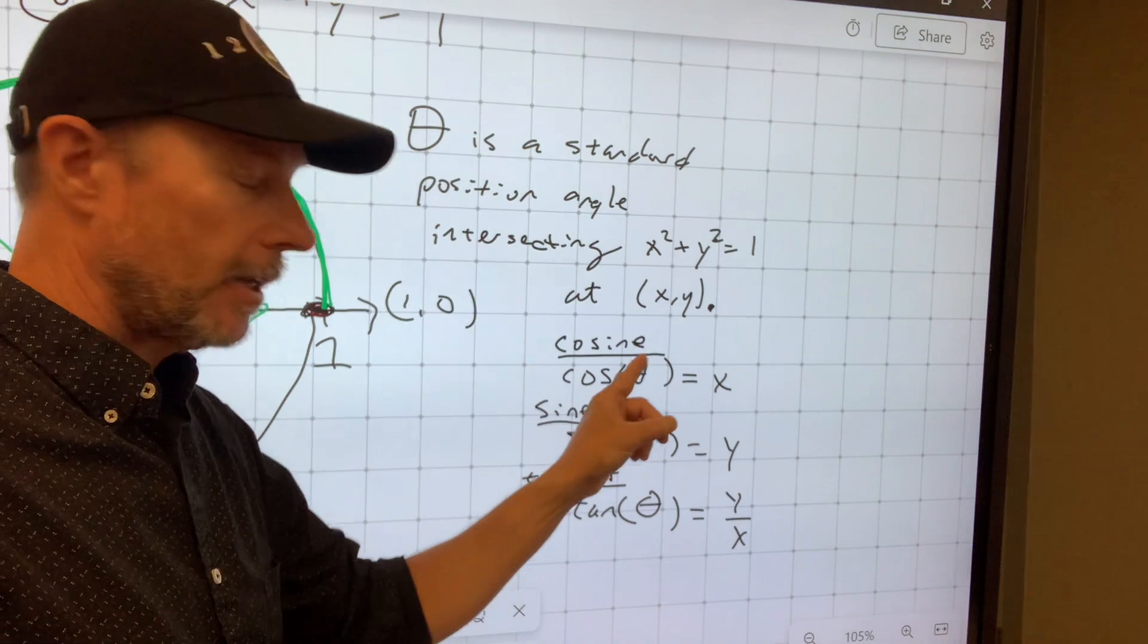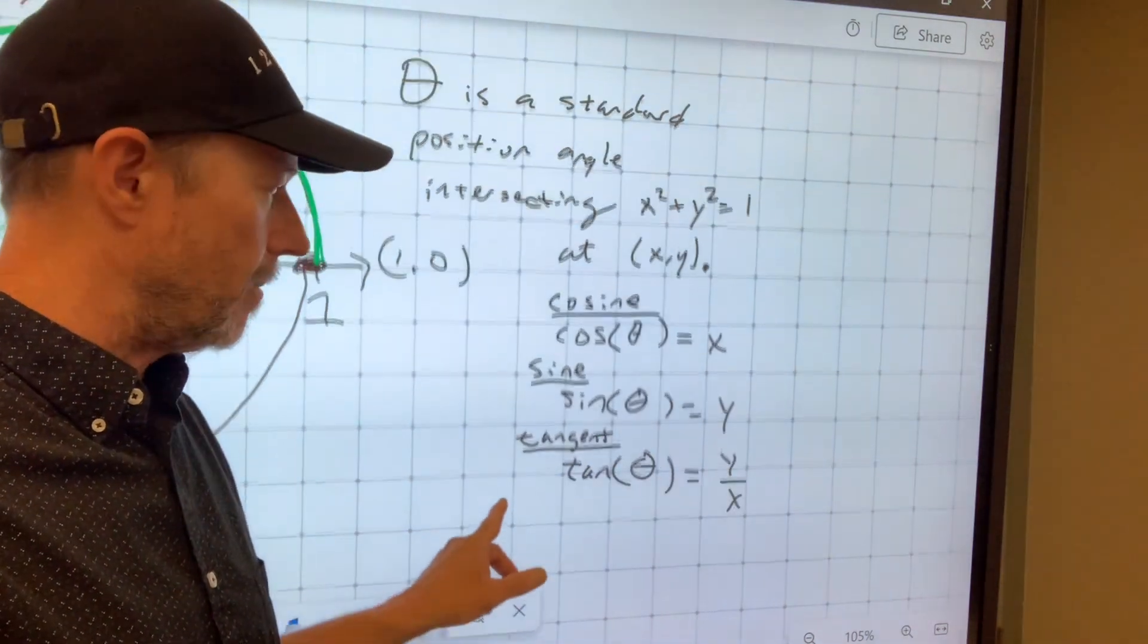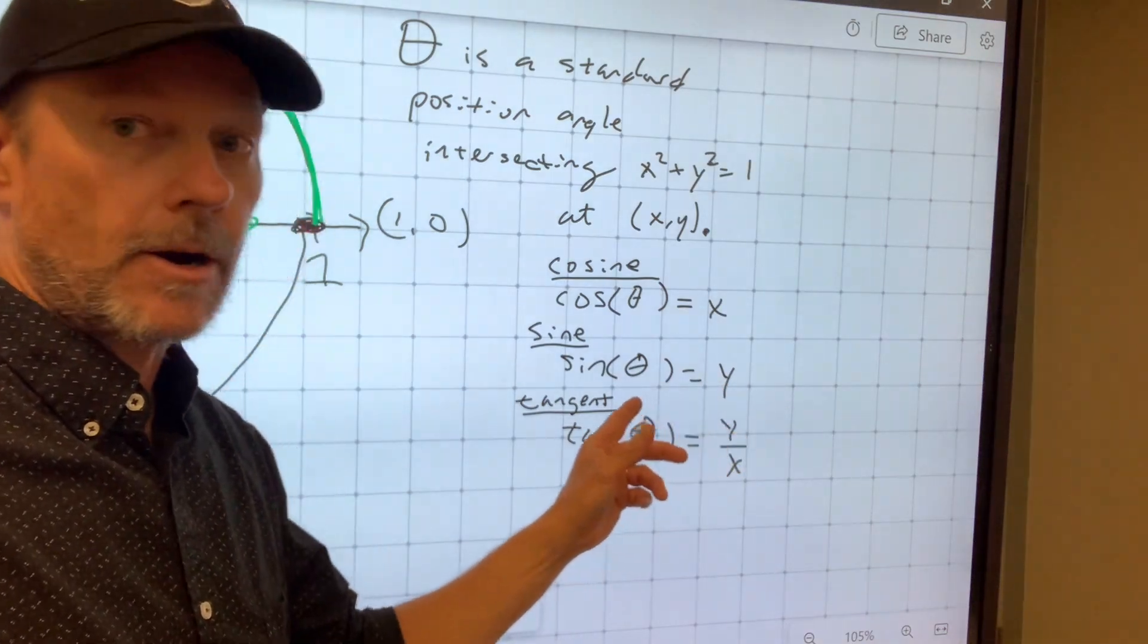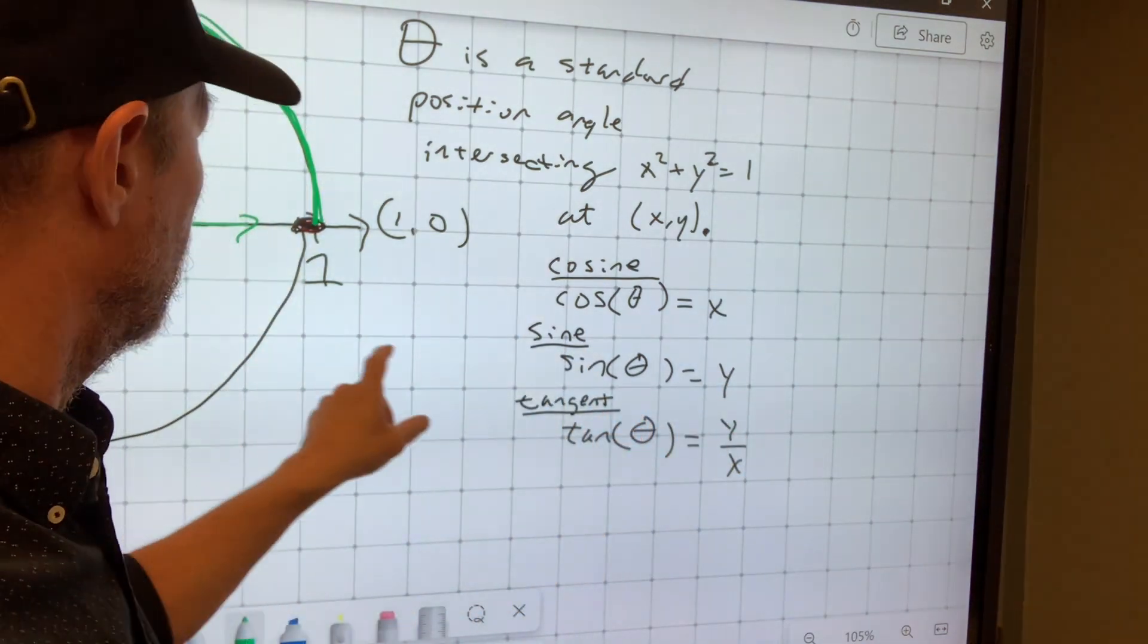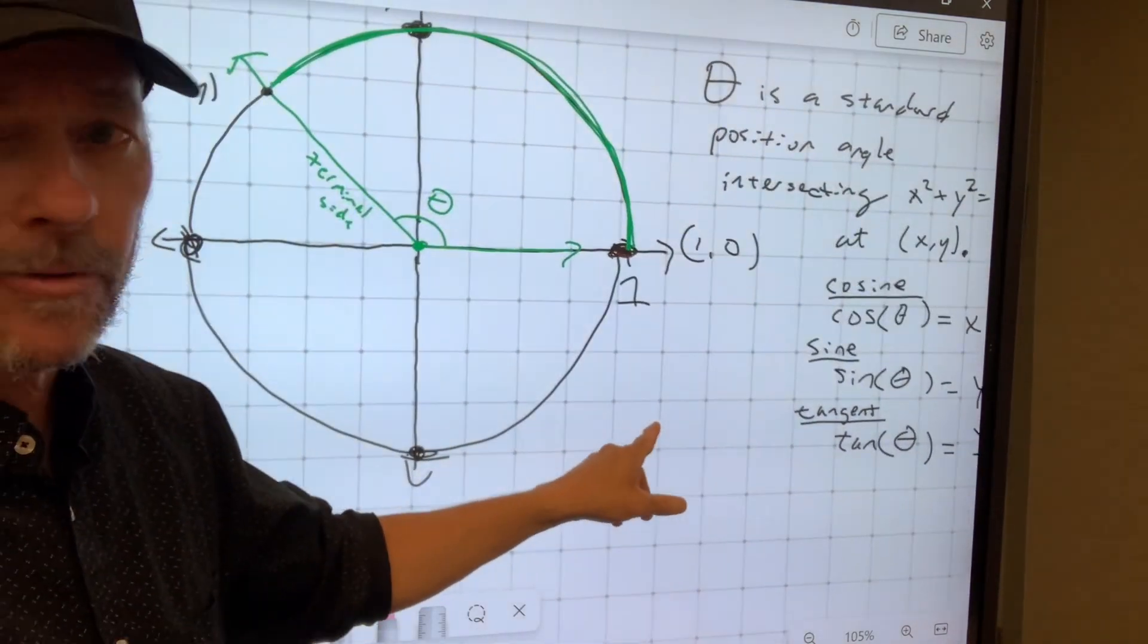So another definition would be to say theta is the arc length that is cut away by an angle. And so you put in an arc length and you get out x for cosine, or you put in the arc length that is cut away by the angle and you get out the y-coordinate where that arc length terminates on the unit circle right here.